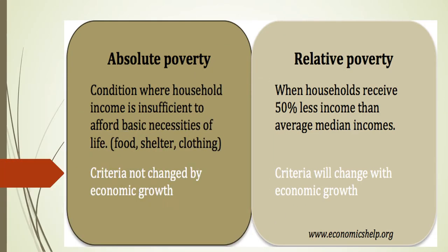The difference between absolute poverty and relative poverty is given in the diagram. Absolute poverty refers to conditions where household income is insufficient to afford basic necessities of life — food, shelter, clothing — and its criteria are not changed by economic growth. On the other hand, relative poverty is when a household receives 50% less than the average median income, and its criteria will change with economic growth or the conditions of different economies in different countries.